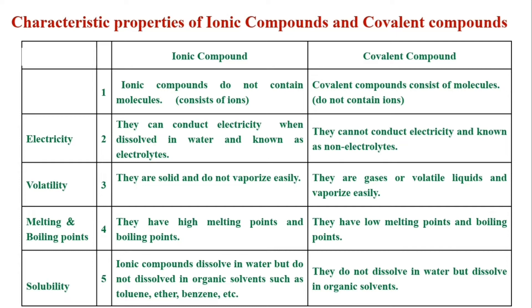Number 2: Melting and Boiling Points. Ionic compounds have high melting points and boiling points. Covalent compounds have low melting points and boiling points.